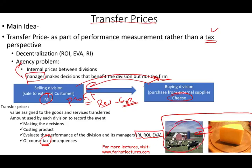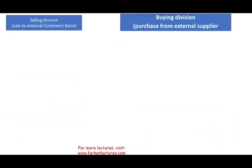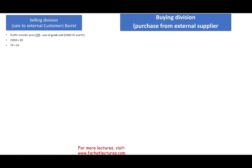I'm going to use the farm — the milk division — as the selling division, and the cheese producers as the buying division. Both are under the same corporate umbrella. The profit for the selling division, when they sell to the cheese division, is the transfer price minus cost of goods sold. Let's assume their cost to produce a barrel of milk is $20 and they sell it for $35. Therefore, the profit for the selling division is $15.